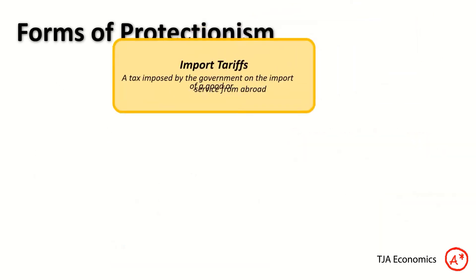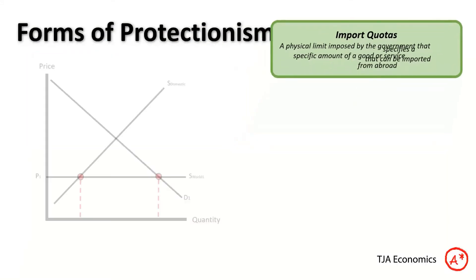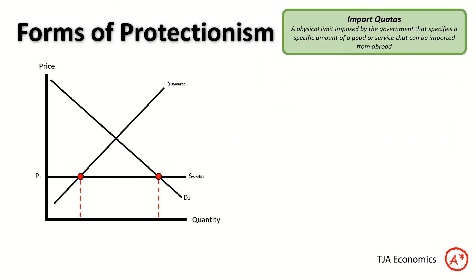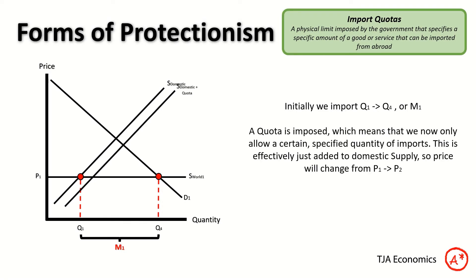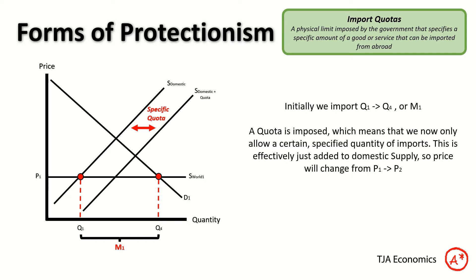Let's have a look at the next form of intervention: quotas. The quota diagram is a bit tricky to get your head around, but once you do, it's quite simple. We start with our initial level of imports M1. A quota is just a specific number of the good or service allowed to import. Because of that, we can effectively add it to the supply curve — a domestic-plus-quota supply curve. The S-world curve becomes redundant. The specific quota is the distance between those two curves.